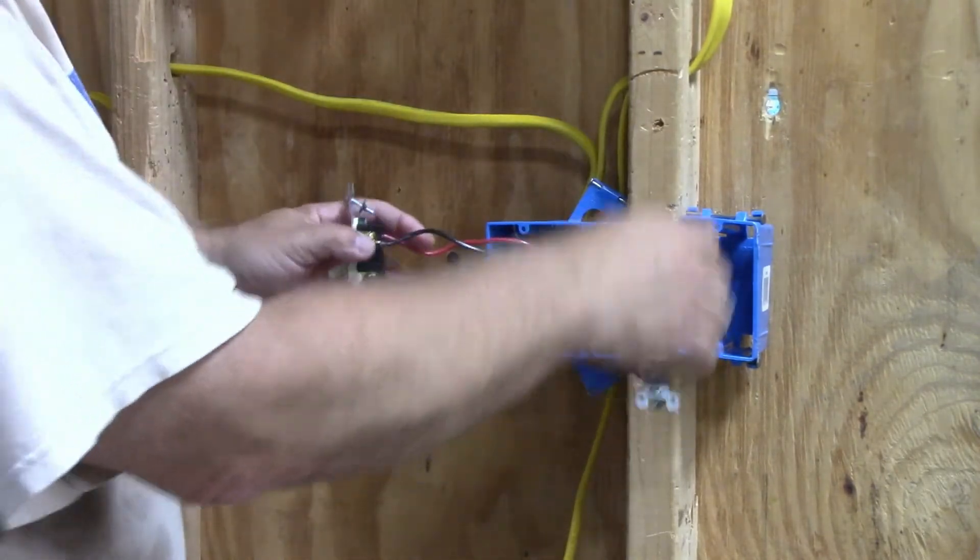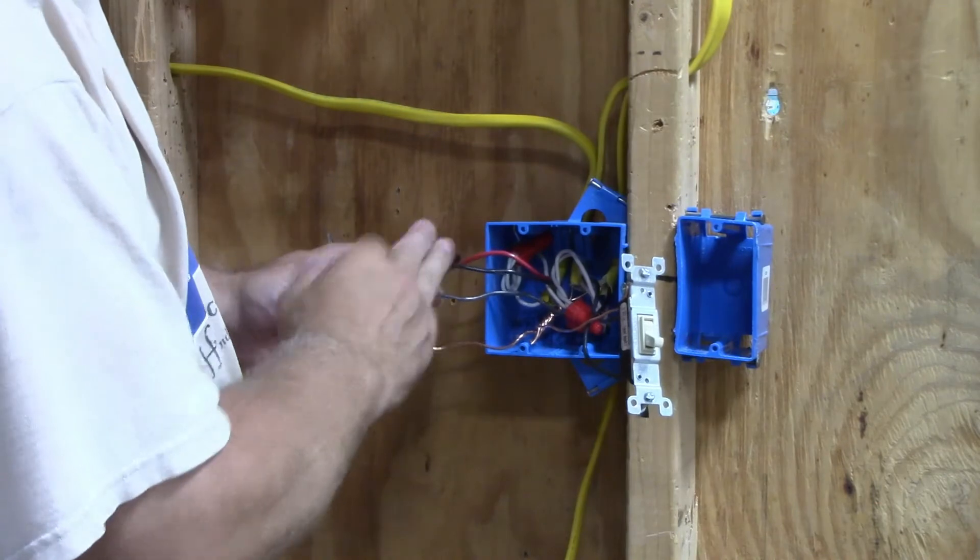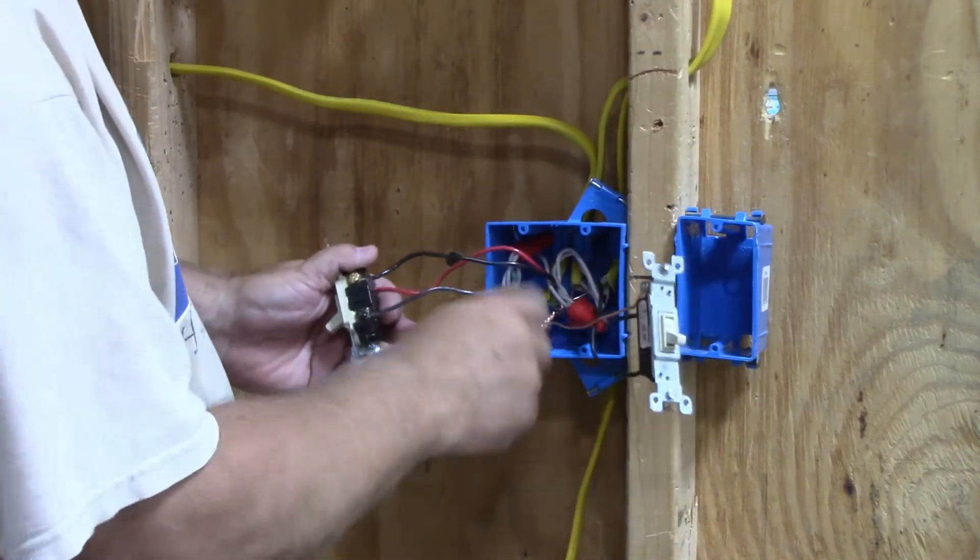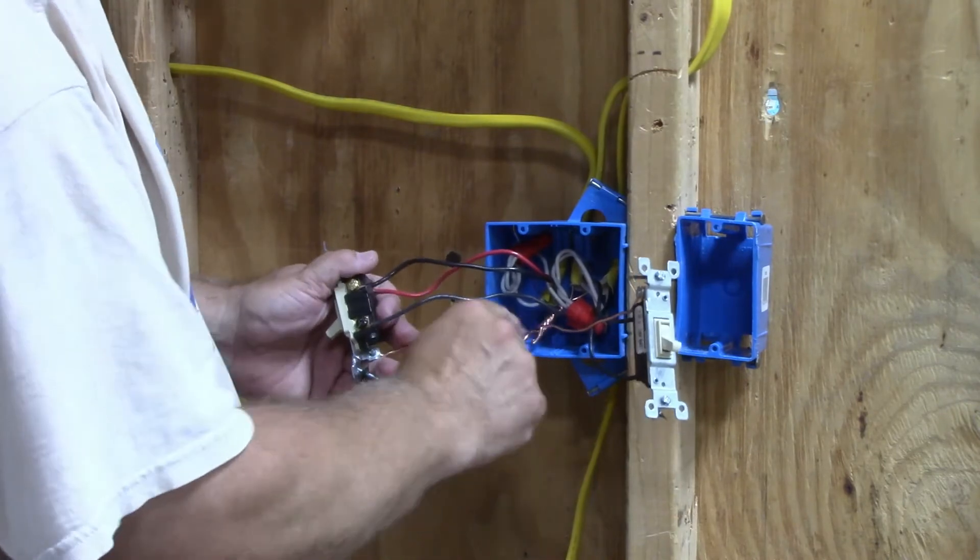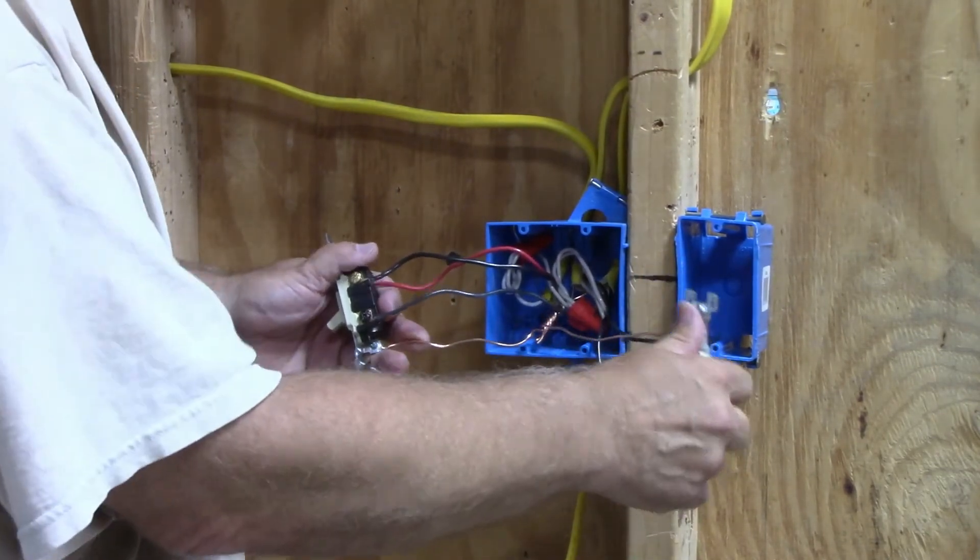A single pole switch running a light on a separate circuit than the three-way switch. What do you need to remember? Number one, all your ground wires can be hooked together. I twisted them all nice and tight so I don't have an open ground. One goes to the single pole switch. One goes to the three-way switch.